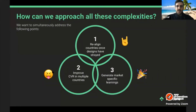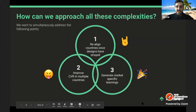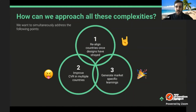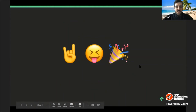We've figured out how to address all three challenges. One: realign countries with a design reset implemented across all countries — even with iterations, there's a level of consistency compared to pure iterative testing. Two: improve conversion rates in multiple countries. Three: generate market-specific learnings by tracking results and reanalyzing them. We're pretty pleased about that.